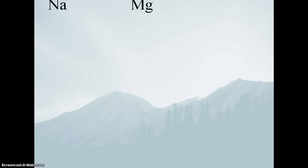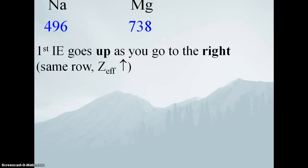Consider sodium and magnesium. Their first ionization energies are 496 kilojoules per mole and 738 kilojoules per mole, respectively. This makes sense — sodium and magnesium are right next to each other on the periodic table, and if we make one step to the right, the ionization energy goes up quite a bit, from about 500 to almost 750. This makes sense because as we go left to right on the periodic table, the effective nuclear charge increases, meaning the amount of positive charge in the nucleus drawing those electrons in and keeping them tight is greater.